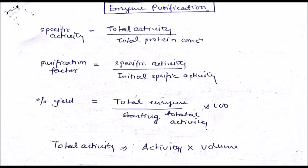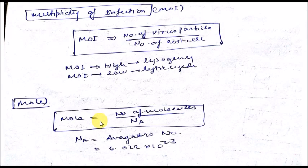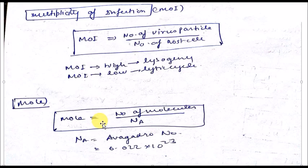These are some extra formulas for enzyme purification added in this video. You can calculate the multiplicity of infection (MOI), which defines the lysogeny cycle or lytic cycle of virus particles. If MOI is high it follows the lysogeny cycle; if MOI is low it follows the lytic cycle. These are some formulas of bioprocess engineering — thank you very much, please like and share my video.